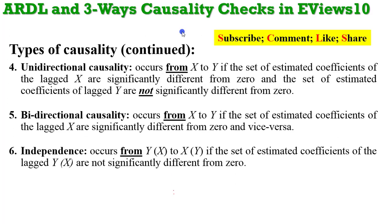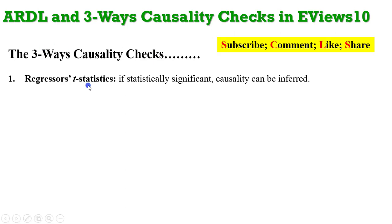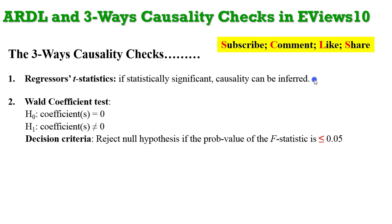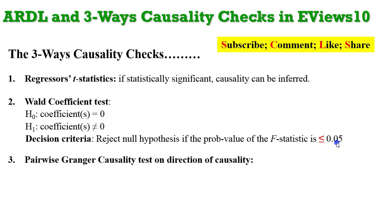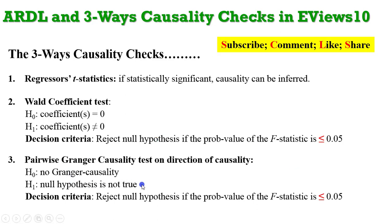So that being said, I've used the model to explain unidirectional, bidirectional, and independent causality. Three ways by which causality can be detected in an ARDL model: the first way is from the regressors' T-statistics — if they are statistically significant, causality can be inferred. The second way is by using the Wald coefficient test — the null hypothesis is that the coefficients of the regressors equal zero, and you reject the null if the p-value of the F-statistic is lower than 0.05. The third approach is by using the pairwise Granger causality test, which gives the direction of causality — reject the null of no Granger causality if the p-value of the F-statistic is lower than 0.05.